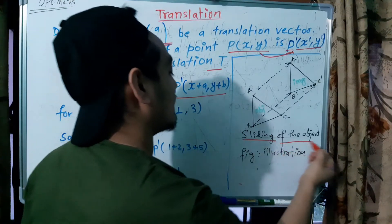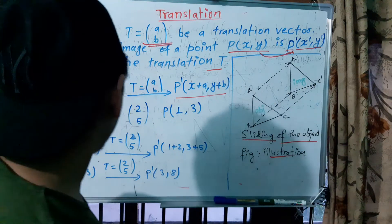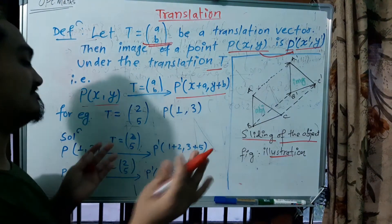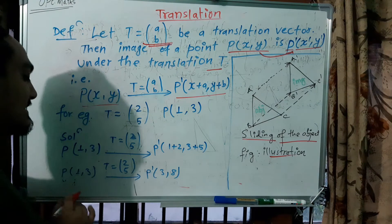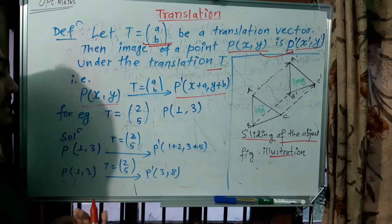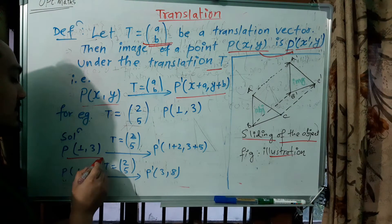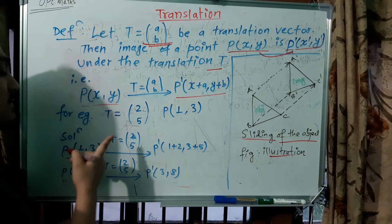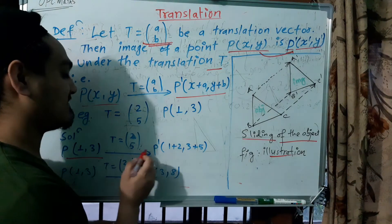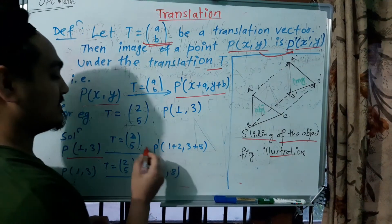Sliding of the object, right. So simple example: point P(1,3) with transformation vector (2,5).